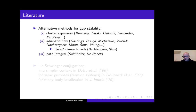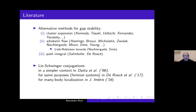Concerning the tool we use — the Lie-Schwinger conjugation — I have to say that in a simpler context this tool was used by Bach and co-workers in 1996 for similar purposes, but restricted to fermion systems. Giuliani, Mastropietro, and Porta combined the Lie-Schwinger conjugation with ideas from cluster expansion. Also Imbrie, in his study of many-body localization in one dimension, used this tool.